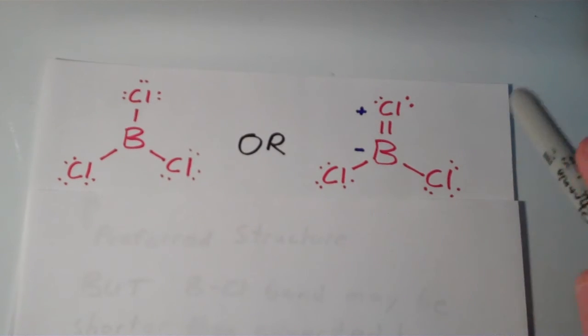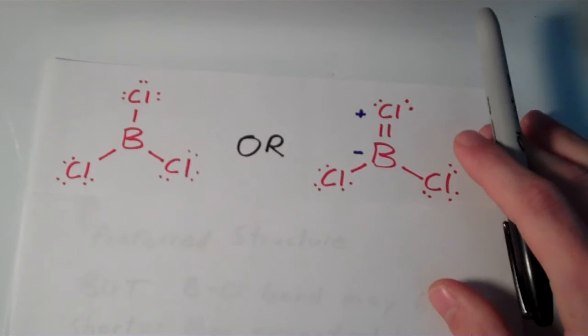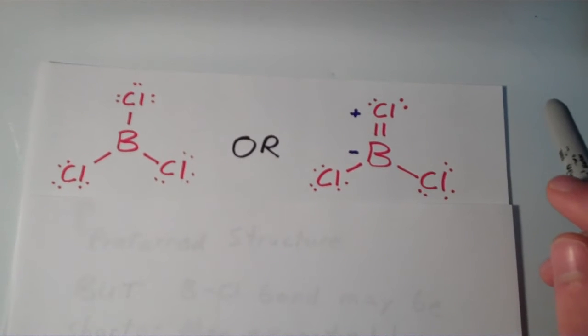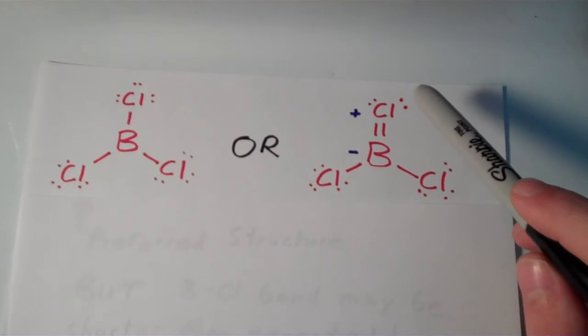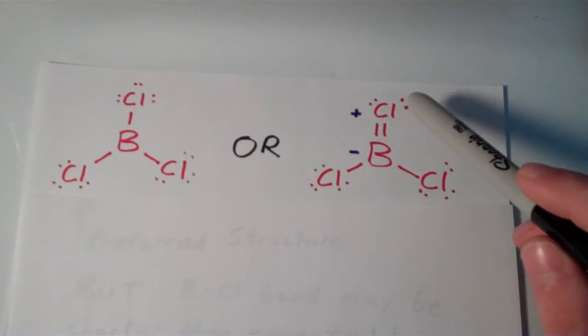Now, the main thing that's wrong with this Lewis structure here on the right is that chlorine is a pretty electronegative atom. So it's really not likely to assume a formal positive charge because this atom is so electronegative.